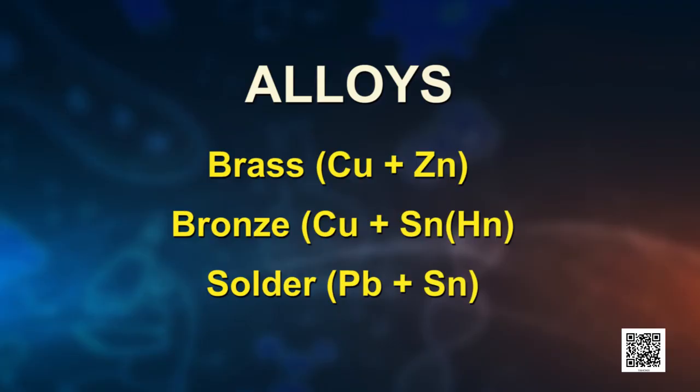An alloy is a homogeneous mixture of two or more metals, or a metal and a non-metal. Alloys are made by first melting the primary metal, then dissolving the other element in it in a definite proportion, and then cooling at room temperature. I am sure you have seen the Iron Pillar at Delhi — the wonder of Indian ancient metallurgy. Find out more about the metal heritage of India.